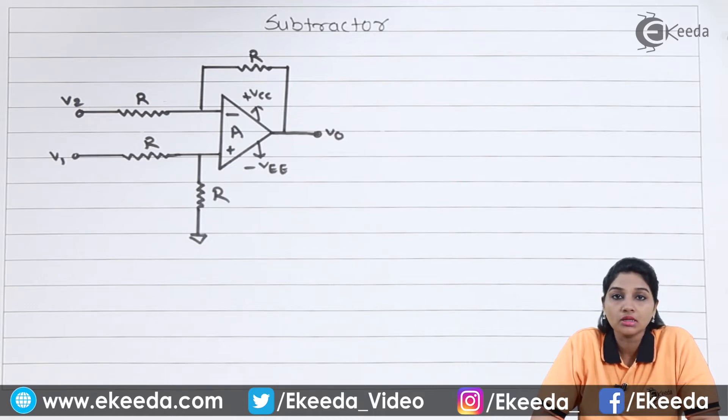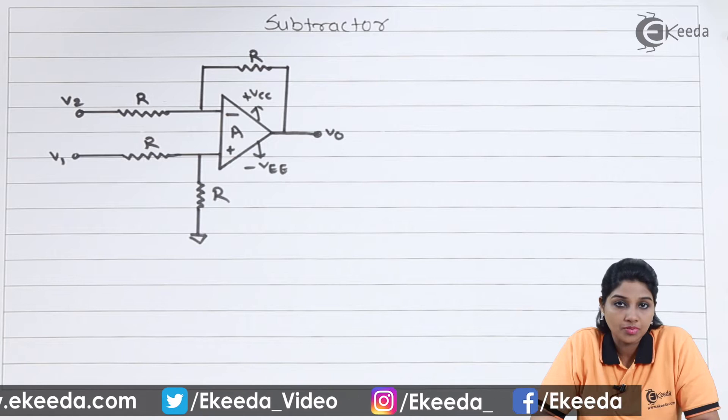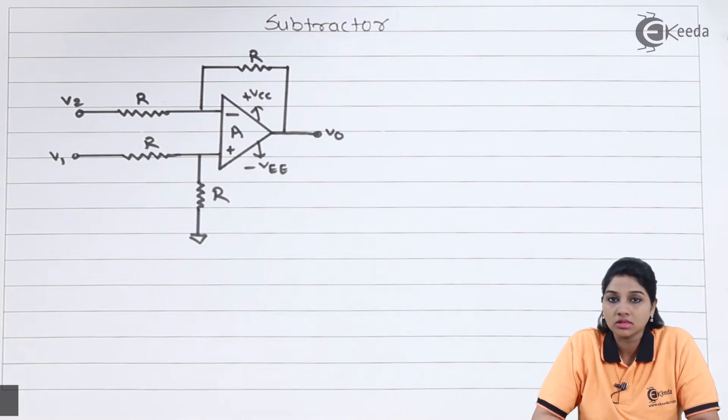So let's see how to obtain the output equation and what are the changes that can be done in case of difference amplifier so that we can get the circuit of subtractor. So first, let's see the circuit diagram.